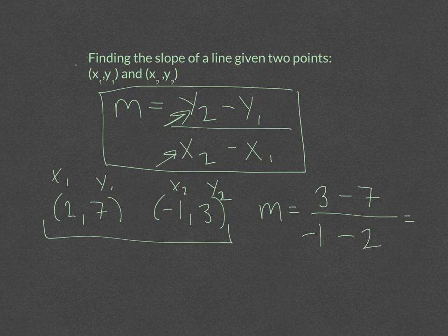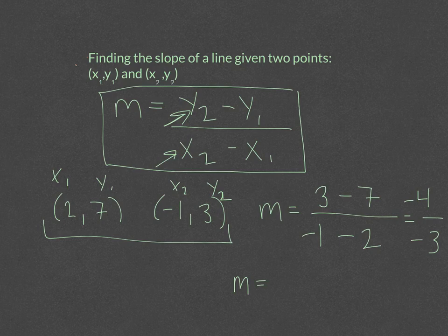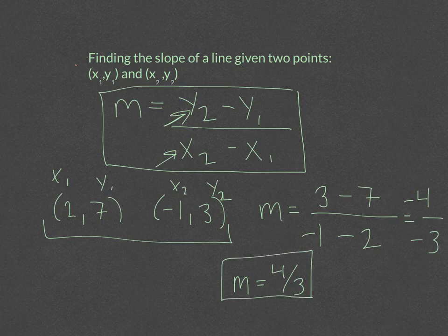So we've got 3 minus 7 is negative 4, and negative 1 minus 2 is negative 3. If we simplify negative 4 divided by negative 3, that would be 4 thirds. And that is the slope of the line that contains these two points.